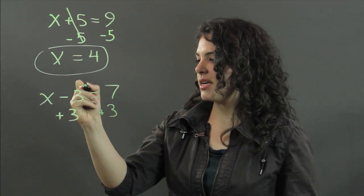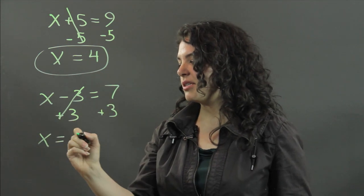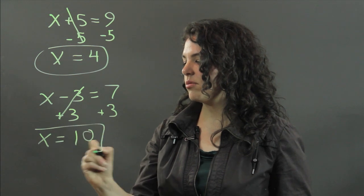Negative 3 plus 3 cancels out. We get x on this side. And 7 plus 3 is 10. x equals 10.